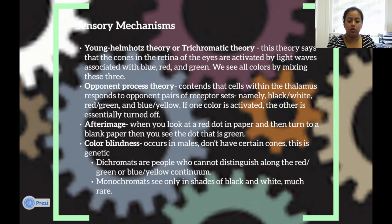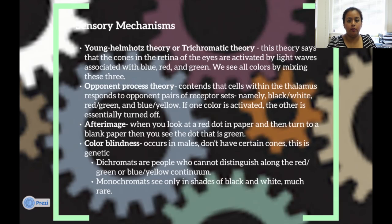Young-Helmholtz's theory states that the cones of the retina are activated by light waves associated with blue, red, and green — and you can see all colors by mixing just these three. The opponent process theory contends that the thalamus responds to opponent pairs of receptor sets, namely black and white, red and green, or blue and yellow. If one color is activated, then the other is turned off — this produces an afterimage. For example, if you stare at a red dot on paper and then look at a black paper, you will see a green dot.